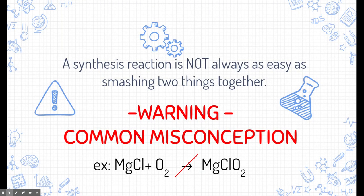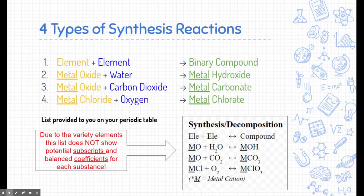There is a common misconception among students: a synthesis reaction is not as easy as just taking two substances and setting them next to each other. There's a lot more work involved. In a chemical reaction, substances typically rearrange themselves. So let's talk about the four types of synthesis reactions.